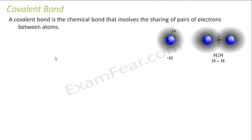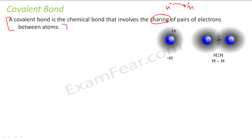A covalent bond is a chemical bond that involves sharing of an electron pair between atoms. For example, hydrogen has one electron and wants to complete its octet, but neither atom is ready to give its electron away. So they share electrons — each hydrogen thinks it has two electrons. Similarly, chlorine has 7 electrons, and since neither is ready to give, they share, so each chlorine thinks it has 7 plus 1 equals 8 electrons.